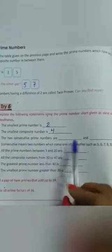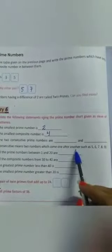Then your next is, the two consecutive prime numbers are dash and dash. Consecutive prime numbers, aap consecutive prime numbers, wo numbers hote hain which comes one after the another, such as 5, 6, 7, 8, 9, means continuously haare. So ye hue consecutive prime numbers. So we have to tell them, the two consecutive prime numbers, so these are 2 and 3.